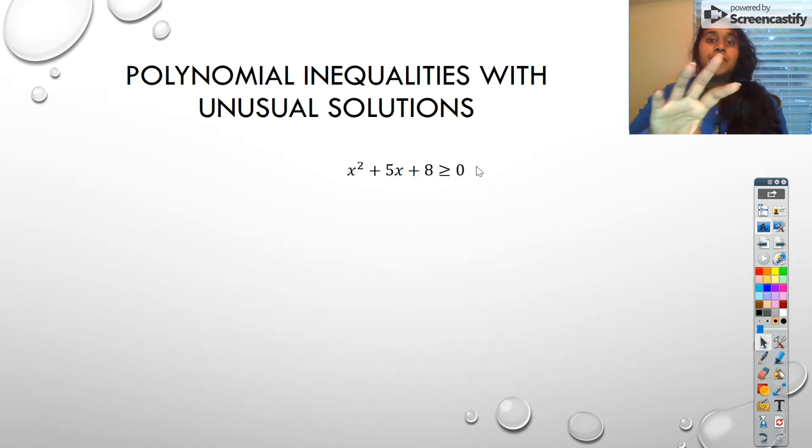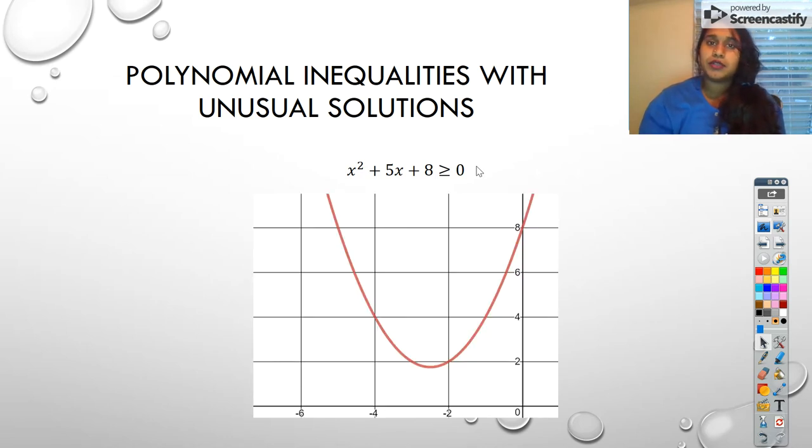But what happens when I flip that? What happens when I say the same polynomial, but now I want to know where it's greater than or equal to zero? Again, look back at that graph. Where is it greater than or equal to zero? Everywhere. All domain, it's greater than or equal to zero. So the answer to this would actually be all reals. So we could say from negative infinity to positive infinity.